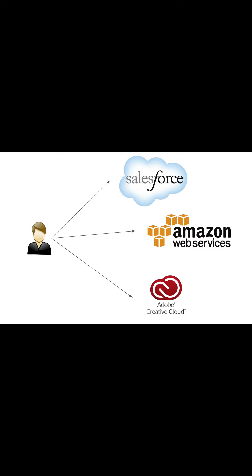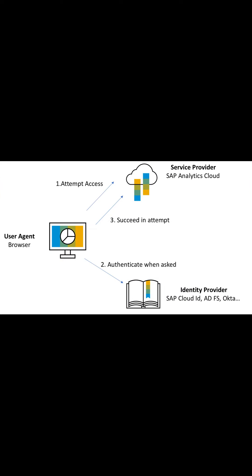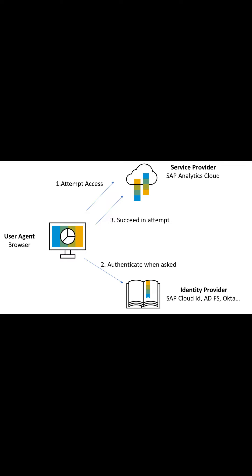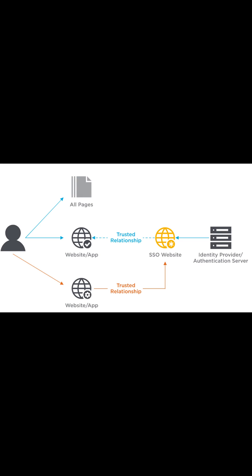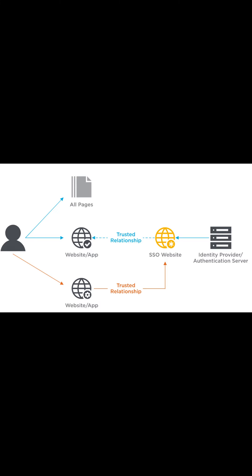you to access multiple web applications using single sign-on. It works by passing authentication information in a particular format between two parties — that is, the identity provider and the web application. SAML is an open standard used for authentication, based upon extensible markup language format. SAML works by exchanging user information such as login, authentication state, identifier, and other relevant attributes